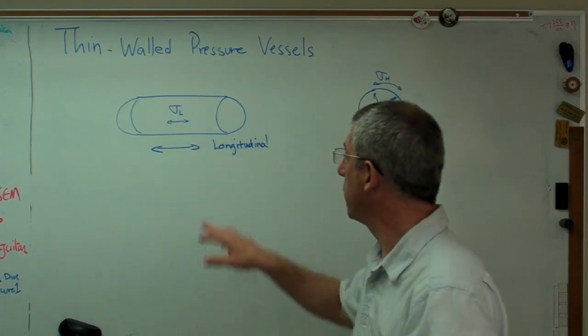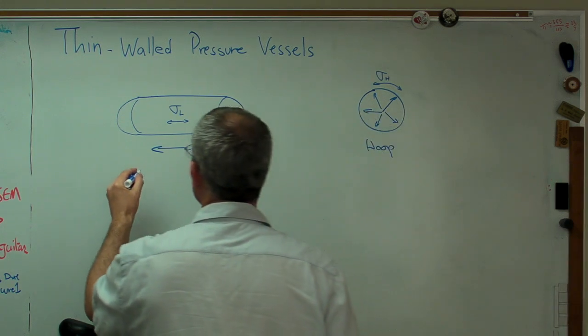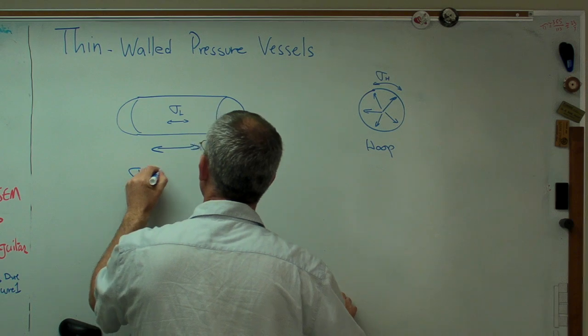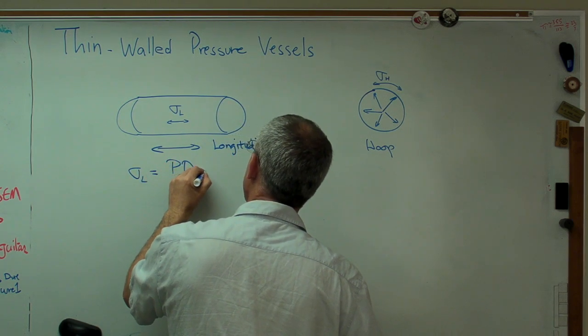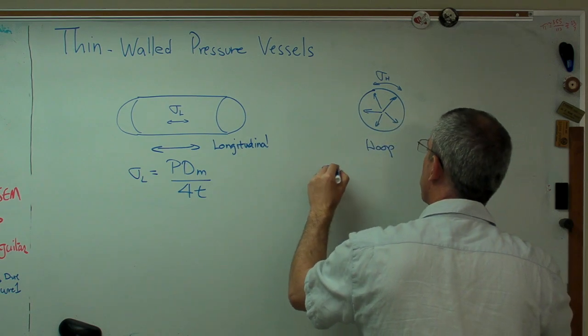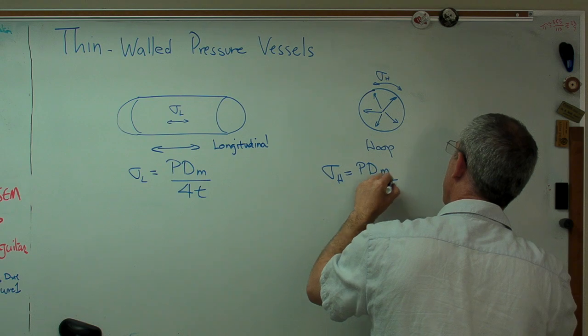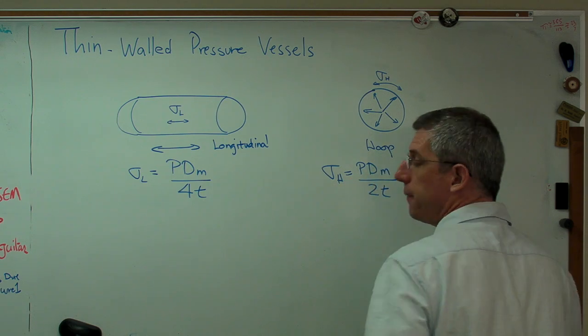Now, these have related, but slightly different expressions for them. The expression for longitudinal stress is pressure times the mean diameter over 4T. And the expression for hoop stress is pressure times the mean diameter over 2T.